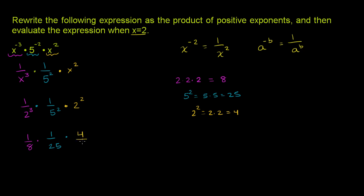You can view that as times 4 over 1. When you multiply fractions, you multiply all the numerators: 1 times 1 times 4 equals 4. And you multiply the denominators: 8 times 25 is going to be 200.